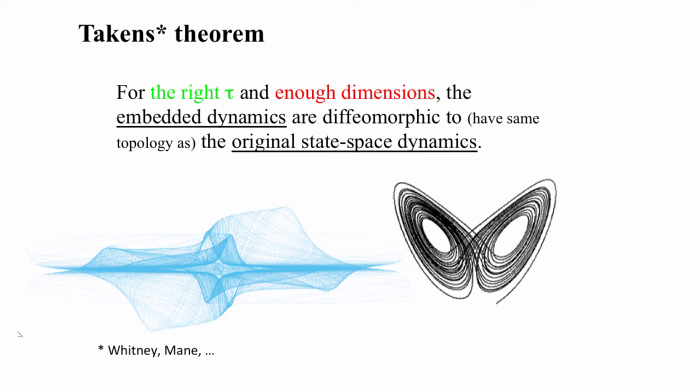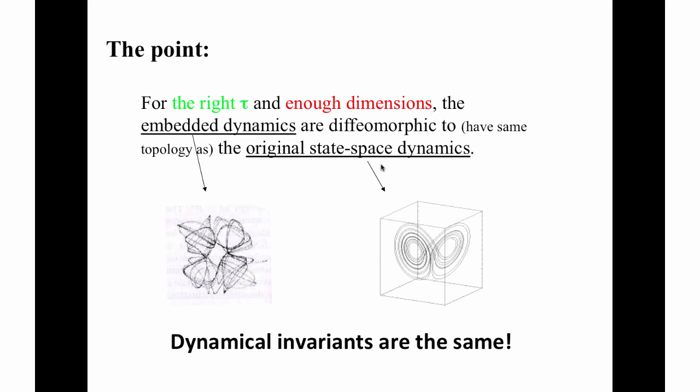Now, our eyes react to geometry, not topology, which is why these objects look different to us. So why is having the same topology useful if they look so different? Because many dynamical invariants, like the Lyapunov exponent, are invariant under transformations that preserve topology. And what that means is that you can measure a single quantity from inside a black box, embed it, calculate the Lyapunov exponent, and assert that your result holds for the true dynamics inside the black box, which you couldn't observe. And that's pretty amazing.